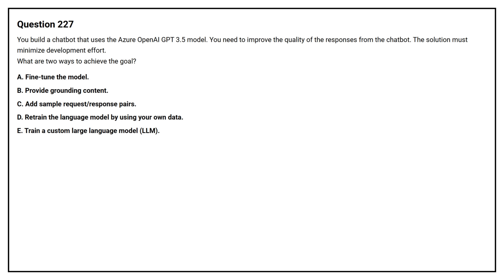Question number 227. You build a chatbot that uses the Azure OpenAI GPT-3.5 model. You need to improve the quality of the responses from the chatbot. The solution must minimize development effort. What are two ways to achieve the goal? Option A: Fine-tune the model. Option B: Provide grounding content. Option C: Add sample request or response pairs. Option D: Retrain the language model using your own data. Option E: Train a custom large language model (LLM).